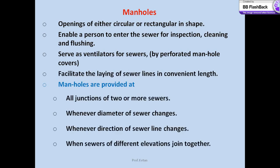Now, where are manholes provided? Generally manholes are provided at all junctions of two or more sewers. Whenever the diameter of a sewer changes — let's say one sewer line is laid at 400 mm diameter and is reduced at some places to 300 mm diameter — a manhole is required to be placed. Whenever the direction of a sewer line changes, unlike a water pipeline where bends may be provided, for a sewer line a manhole is always required. When sewers of different elevations join together — one laid at 0.9 meter from ground level and another at 1.5 meter — manholes are required at those places.